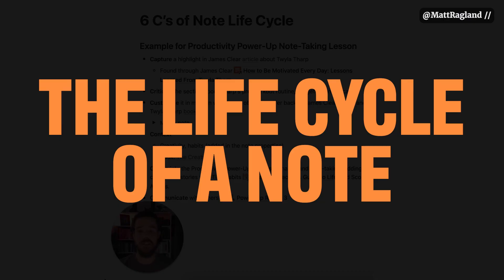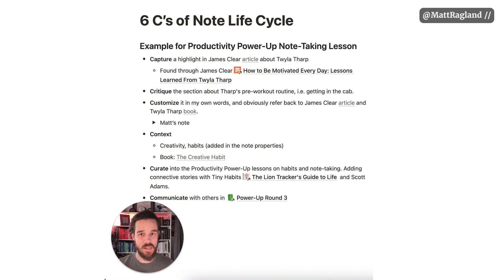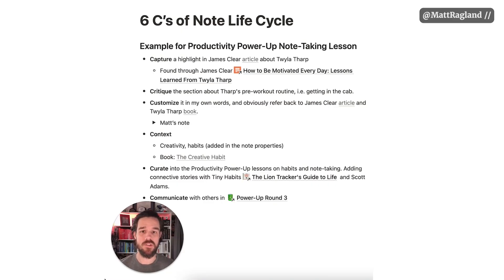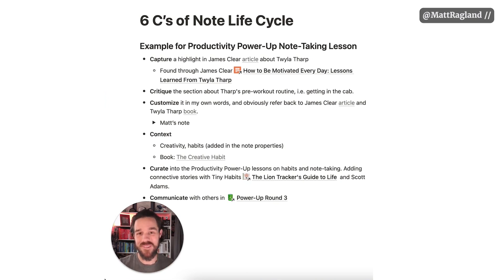With all that out of the way, let's jump into the tutorial. I'm going to show you how to do all of this in Notion from capture to communication. I want to give you a clear walkthrough for what I see as the life cycle of a note. There are six C's: capture, critique, customize, context, curate, and communicate. I'll walk you through these using a highlight from an article I'm reading about habits and motivation, all the way through to communicating it as a lesson in my Productivity Power Up course.